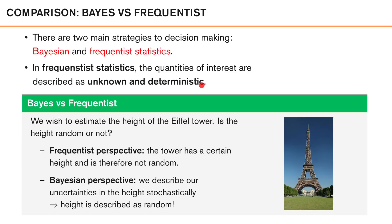As a consequence, in the medical example that we discussed earlier, a frequentist would not state that given the observations, the patient has the flu with 97% probability and the common cold with 3% probability. Rather, they would say something like: based on the observations, the patient most likely has the flu. The difference is that for a Bayesian, the answer is a probability distribution of the disease based on our observations, while for a frequentist, the answer is the most likely disease based on our observations.